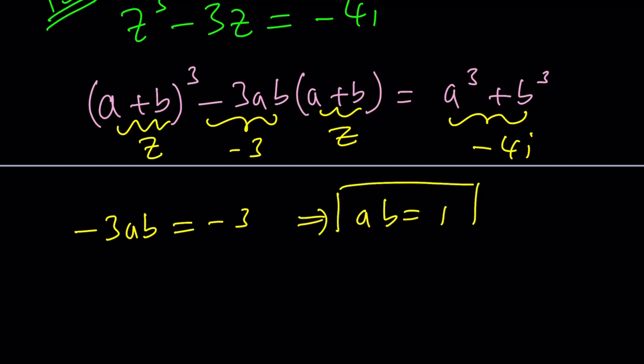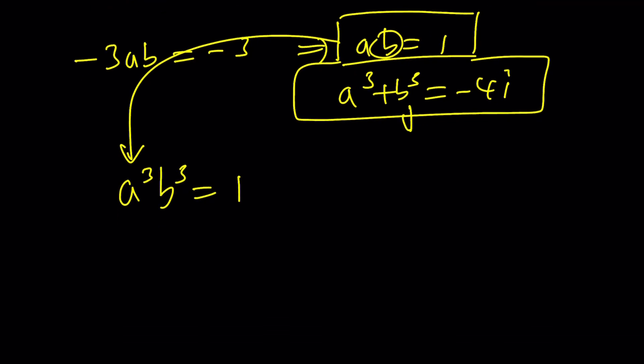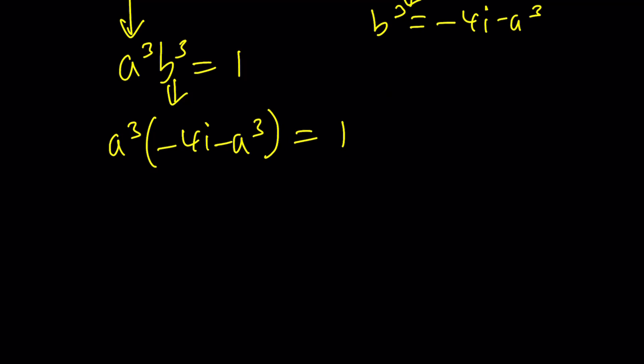From here, ab equals 1. And then from the second one, a cubed, b cubed, their sum is negative 4i. Now this is a system you can use substitution, like replace b with 1 over a, or you can just cube the first equation, a cubed b cubed equals 1. And then from here, you can isolate b cubed, negative 4i minus a cubed. And then here, you can replace b cubed with that.